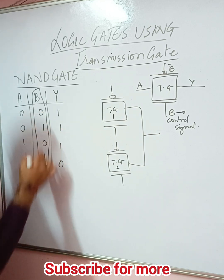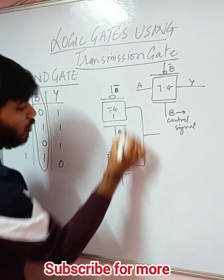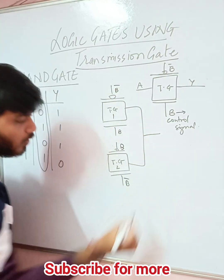Now when we assume B as a control signal, we will assume this as B, this as B bar. This has to be B and this has to be B bar.